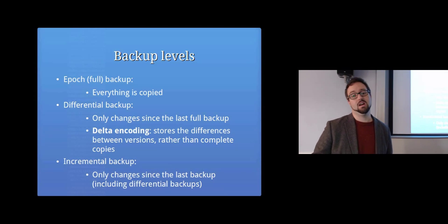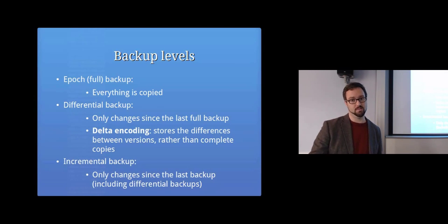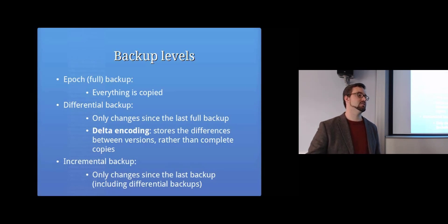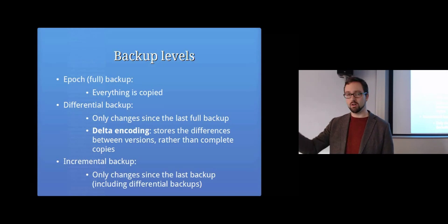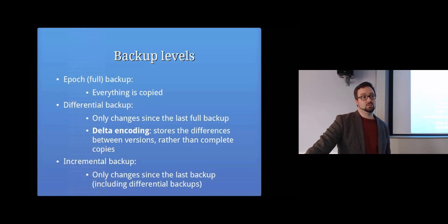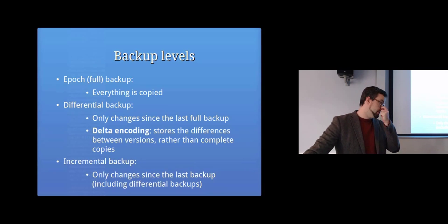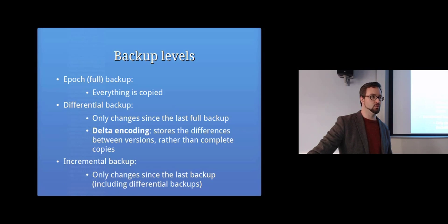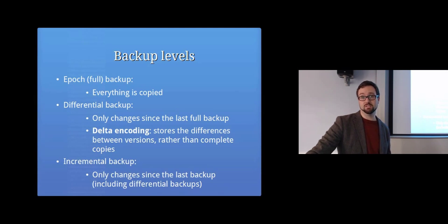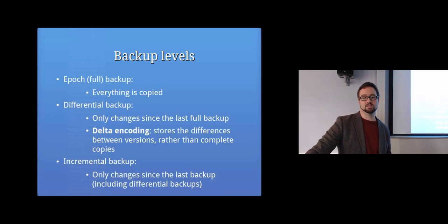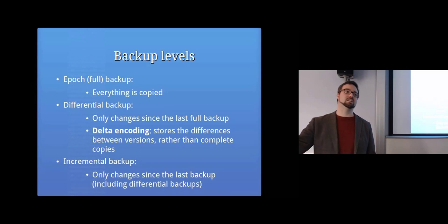There are lots of different ways to manage backup levels. An epoch backup is a full backup - you take everything, so for example backing up an entire PC, you copy everything on that computer and store it. The following week, rather than copying everything again, you only back up the changes and new files - that's what differential backups are. A differential backup is where you have the files that have changed since the last epoch backup stored in a separate place.